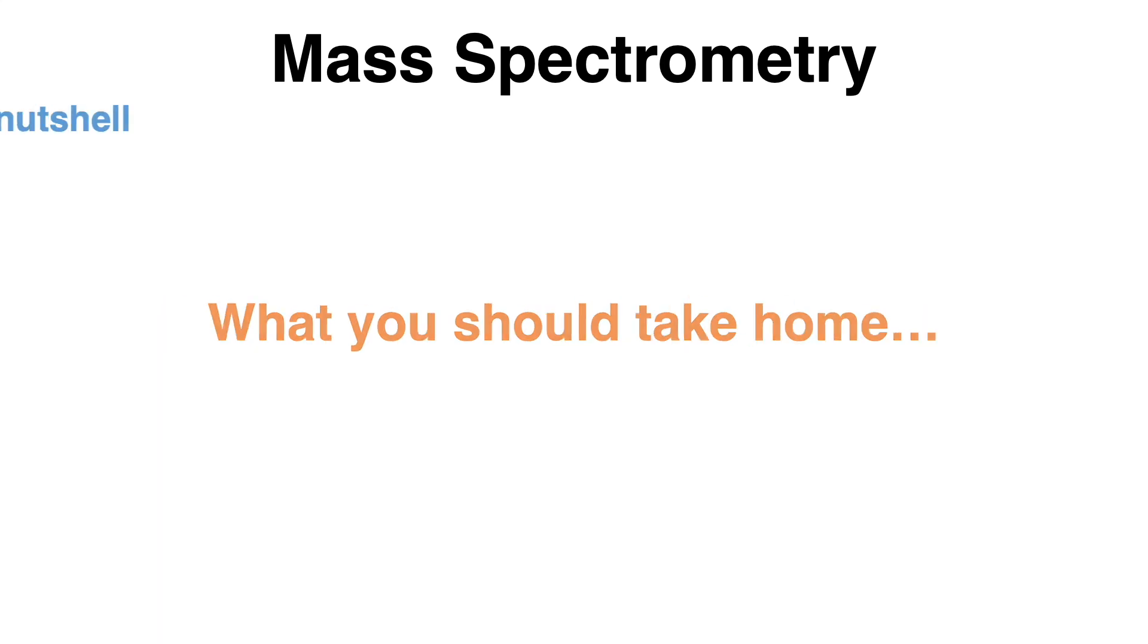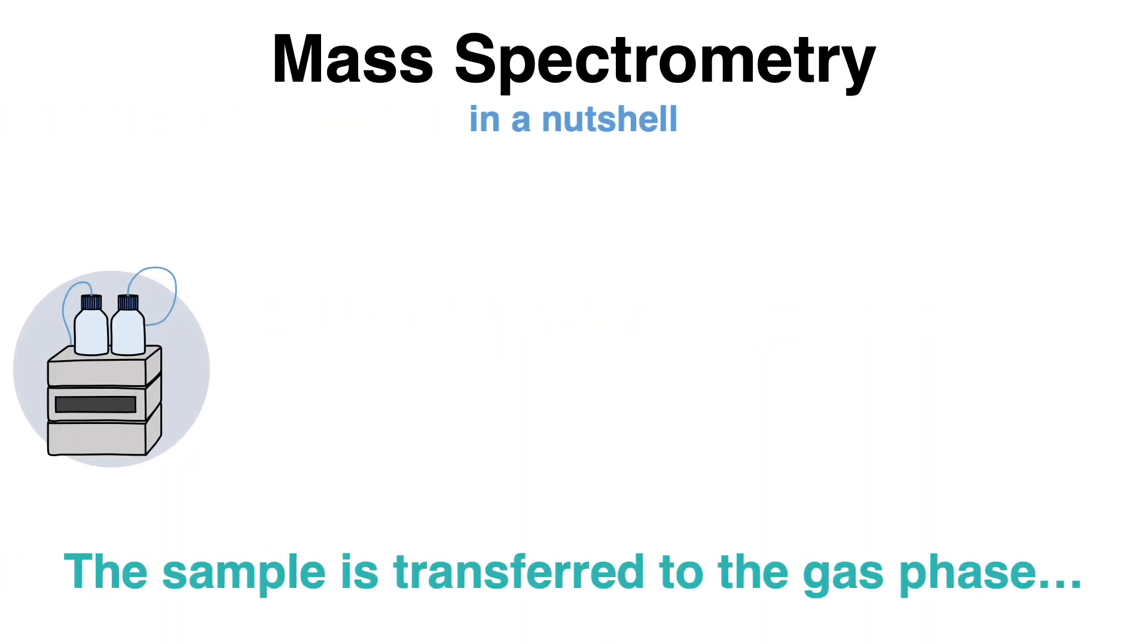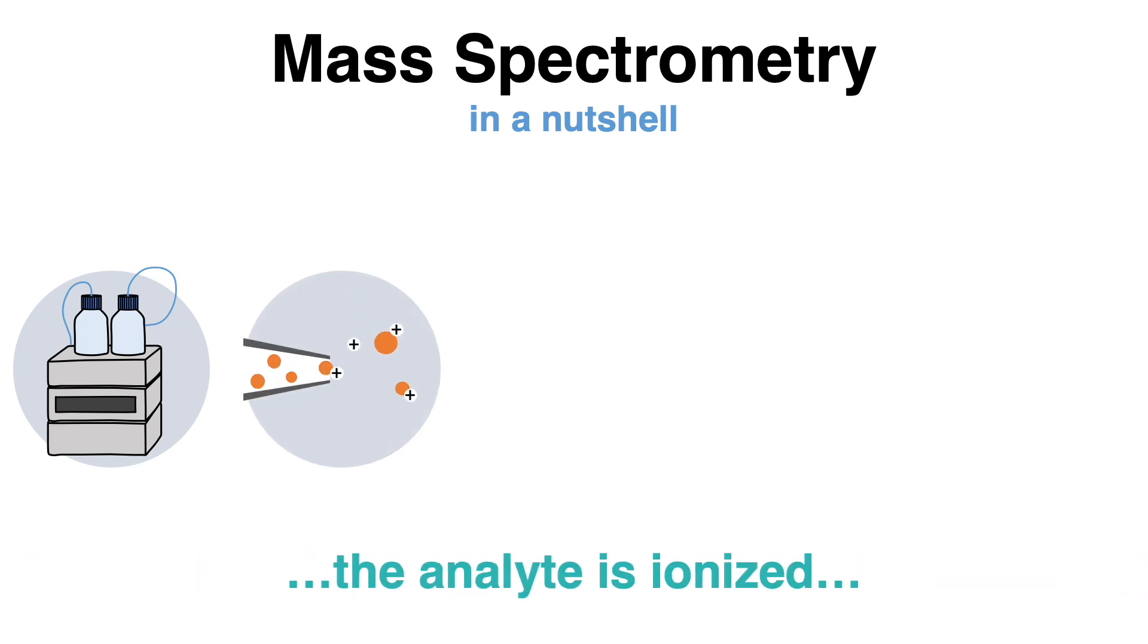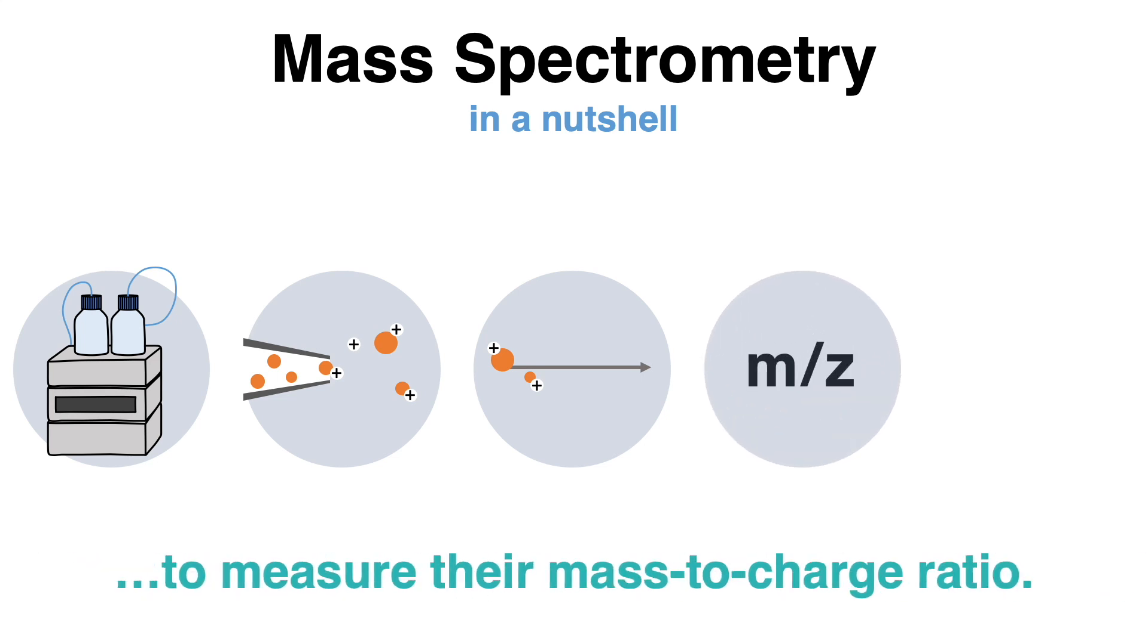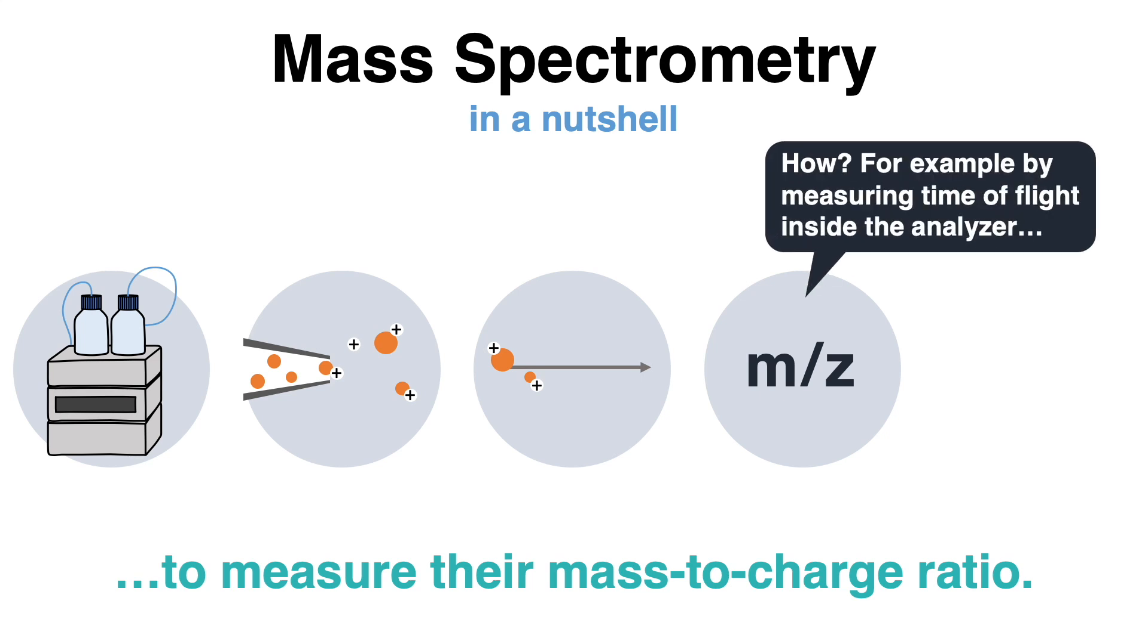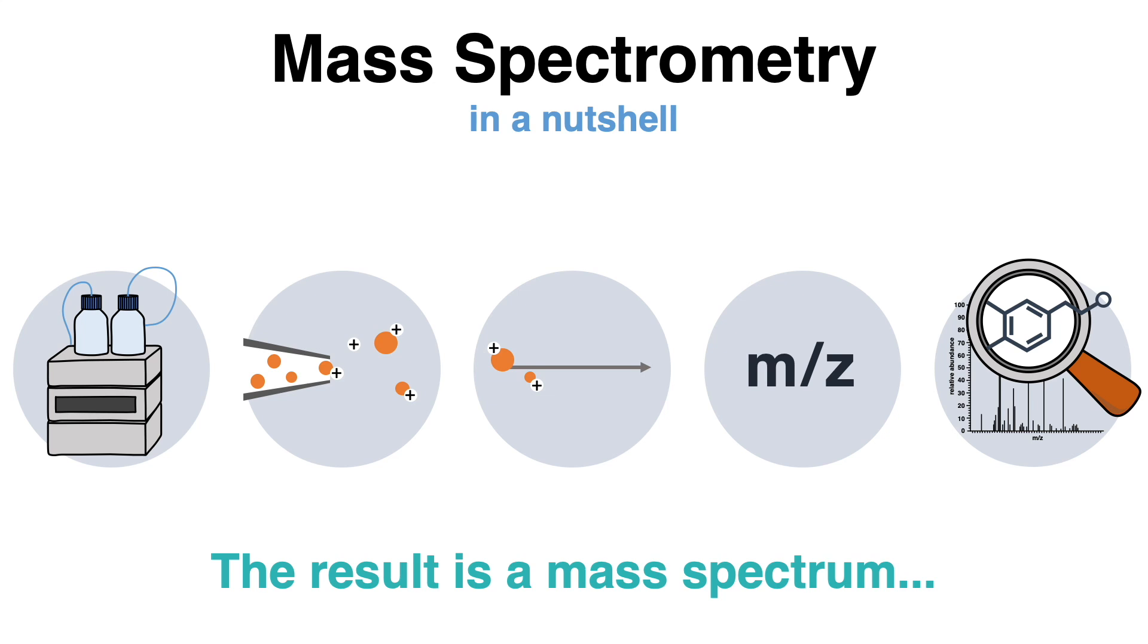During mass spectrometry, a sample of interest is first transferred to the gas phase and ionized, which means charge is added to the sample. These charged ions are then accelerated, which helps to separate them inside the analyzer according to their mass-to-charge ratio. A common way to accomplish that is by measuring the time it takes for the ions to hit the detector. The result will be shown as a mass spectrum, which in combination with databases is used to identify the sample of interest.